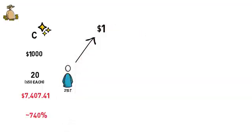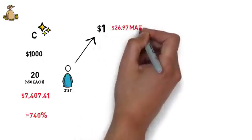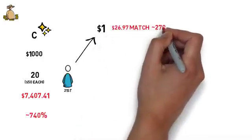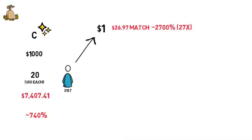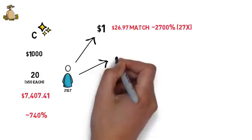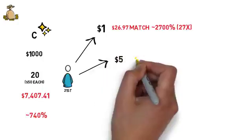$5 would be matched by $59.80, around 1200%, 12x of the contributed amount.